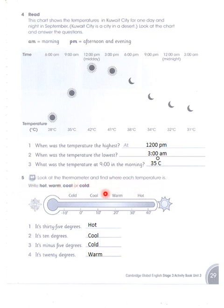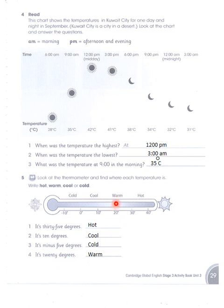Look at the thermometer and find where each temperature is — hot, warm, cool, or cold. 35 degrees centigrade is hot, because from 30 to 40 we consider it hot. 10 degrees is cool, because from 0 to 10 we consider it cool. Minus 5 degrees is cold, because from 0 to minus 10 it is cold. 20 degrees is warm, because from 10 to 30 it is warm. After 30 it is considered hot.